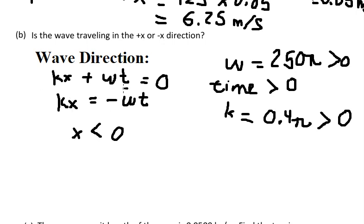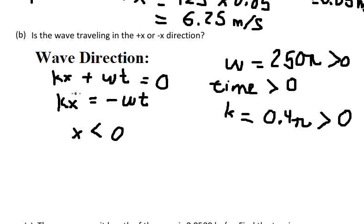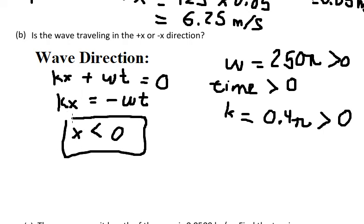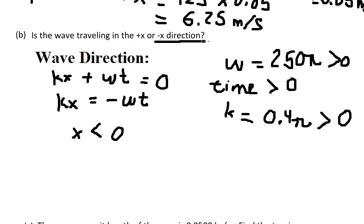To produce a negative value on the right side, S must be negative. So the answer for question B is that the wave travels in the negative S direction.